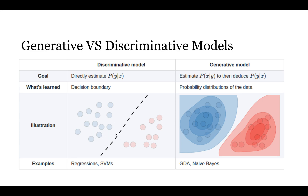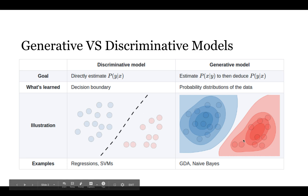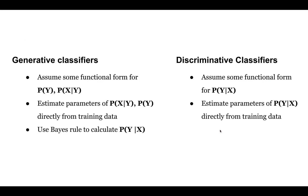For discriminative models, examples include regression and SVM. For generative models, examples include GDA (Gaussian Discriminant Analysis) and Naive Bayes. In terms of parameters, for generative models we learn P(Y) and P(X|Y), while for discriminative models the learning parameter is P(Y|X).